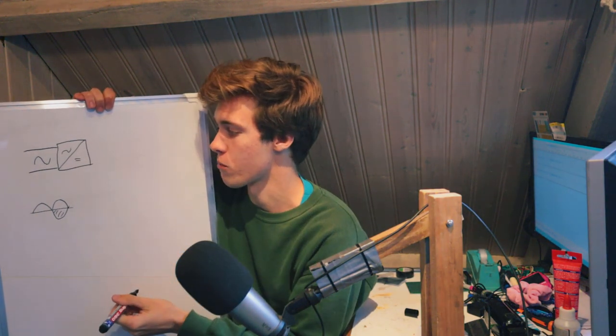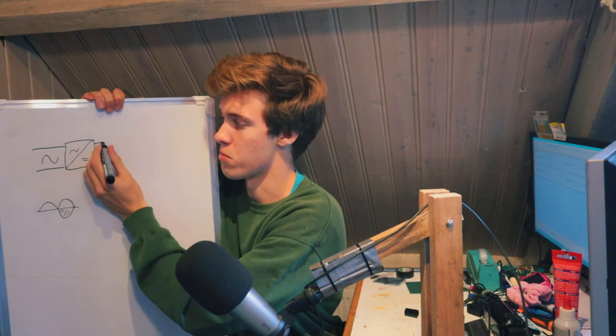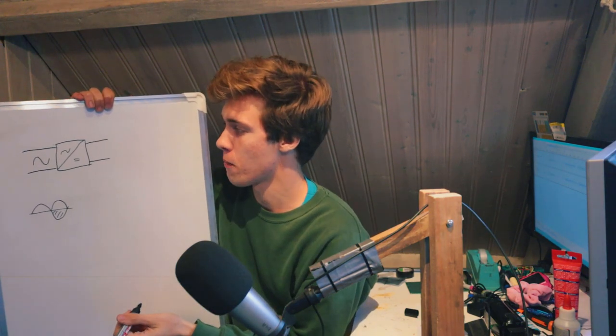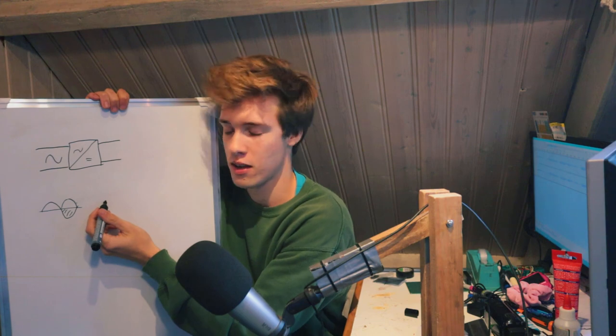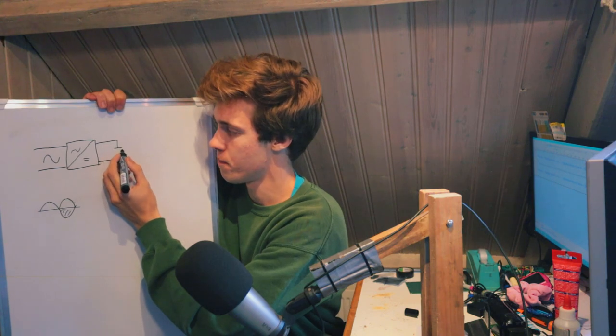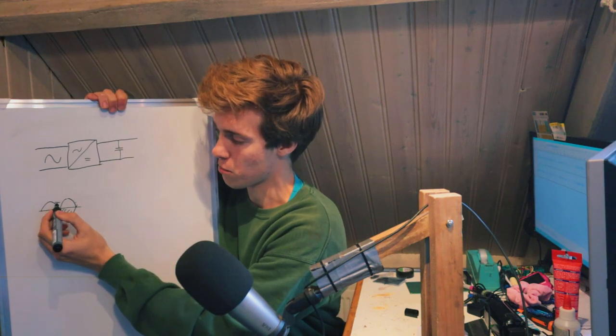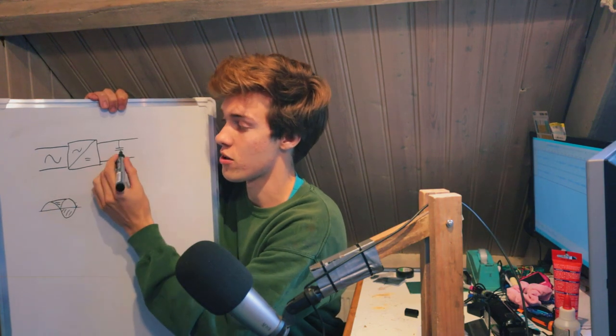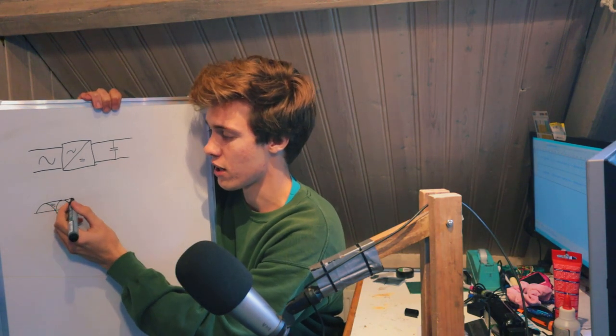After the bridge rectifier, we get kind of this bumpy signal, but at least the negative parts have been removed. The next thing we need to do is smooth this out. So we need to make it into a flat, nice DC, rather than this weird, bumpy signal. In order to do that, we put in a capacitor. The capacitor is going to smooth out all of these little dips. These dips are essentially going to get filled up by the charge that is held inside that capacitor.